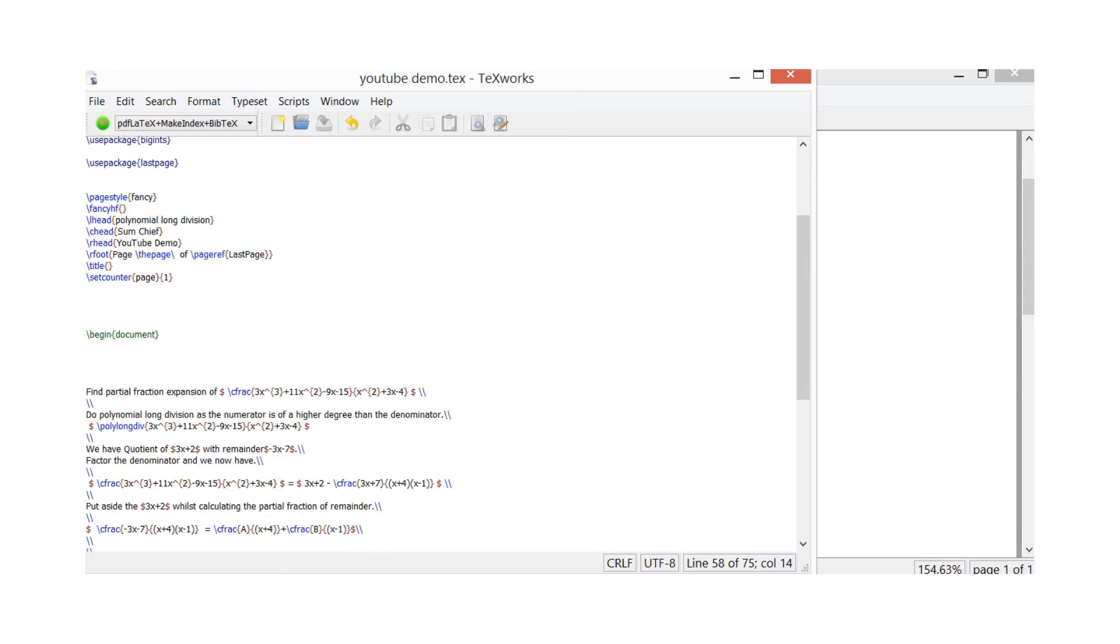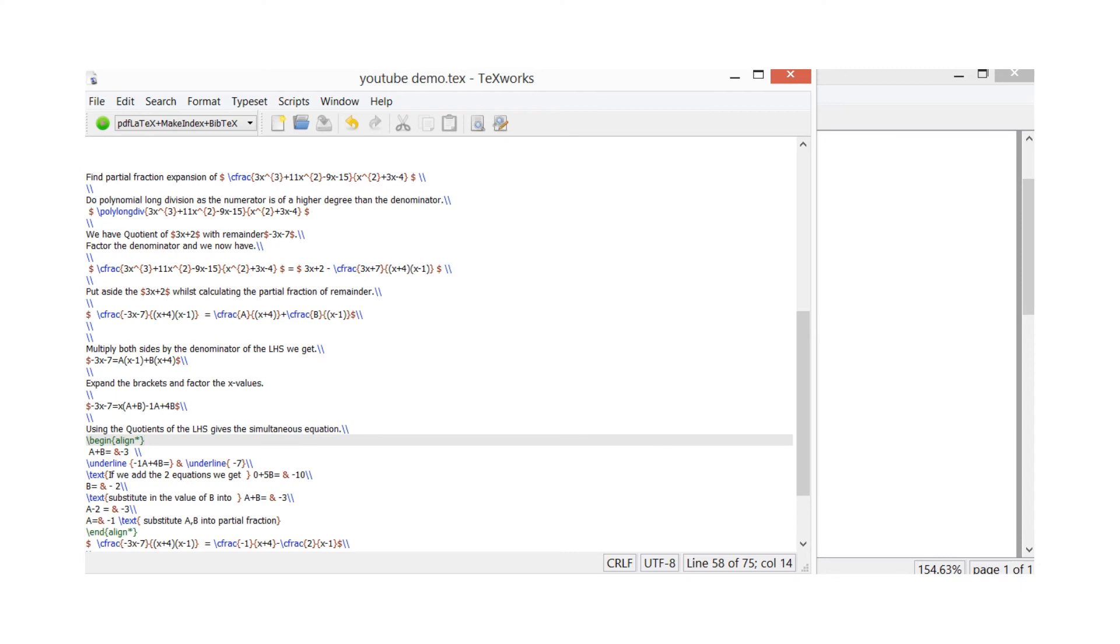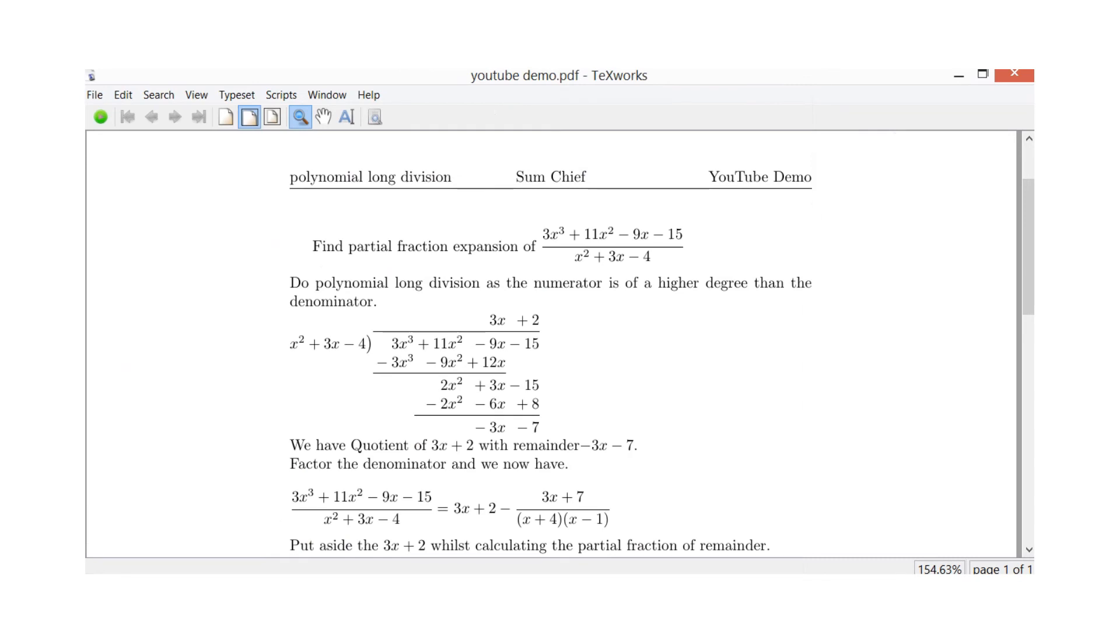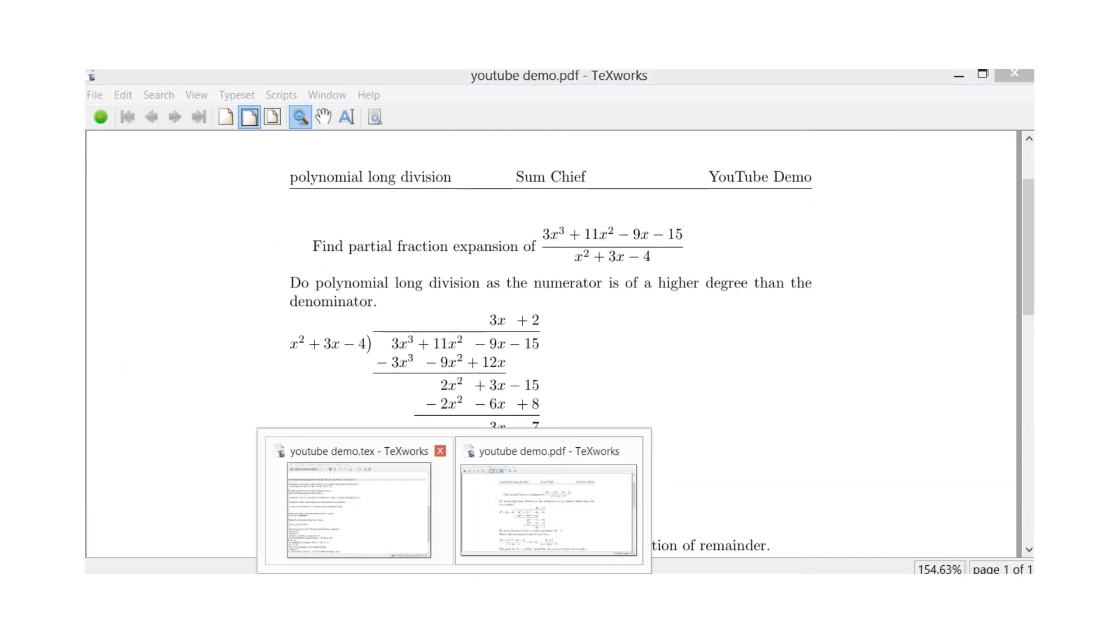So I've set the page up. So I'll begin document. So I'll just type in there in words, find partial fraction expansion of, then begin the mathematical type. Here, I've got the dollar sign. And I've typed in my question. So CFRAC, that's a good function there. You then have to have brackets to have your numerator, and then brackets, curly braces, for your denominator, and that's the dollar sign again to end. So whenever you're doing your LaTeX programming, you need to have, for fractions, you need curly braces each side.